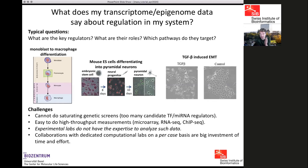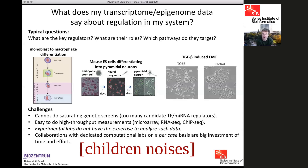It's relatively easy to do high-throughput measurements of gene expression in a time course, under perturbations, or in different conditions — RNA-seq, ChIP-seq, or microarrays. The problem many experimentalists face is that they do not have the expertise to analyze such data, and so they have to collaborate.